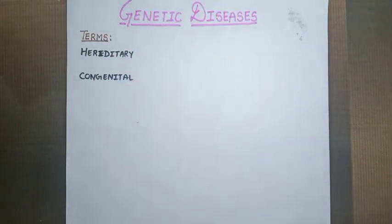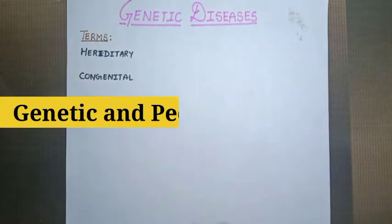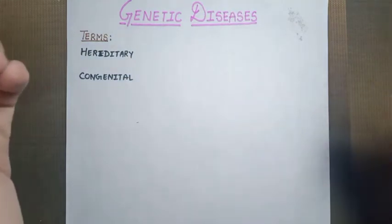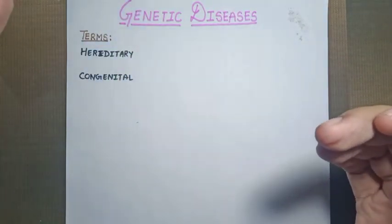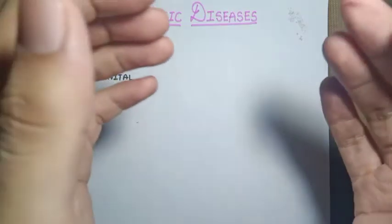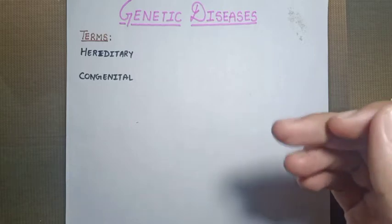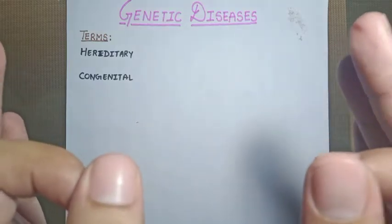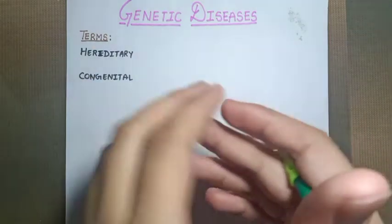Hello everyone, welcome to the channel. From this video onwards we are starting with a new chapter from Robbins — that is genetic and pediatric diseases. First, let's understand the essence of this chapter: why we are grouping these two topics together. Genetic diseases may be responsible for most of the pediatric diseases found at the time of birth. However, you should always keep in mind that not all pediatric diseases are of genetic origin.